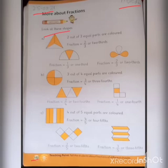Can you see all these shapes? This is a triangle, number A. This is a triangle. Two out of three equal parts are colored. The triangle has three parts, and two parts are colored. So its fraction is 2/3 or two-thirds.